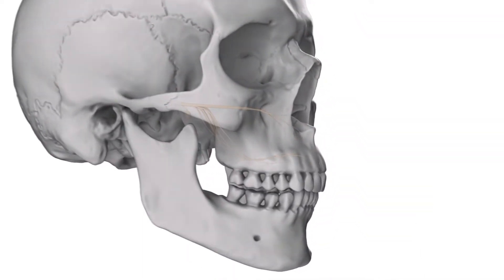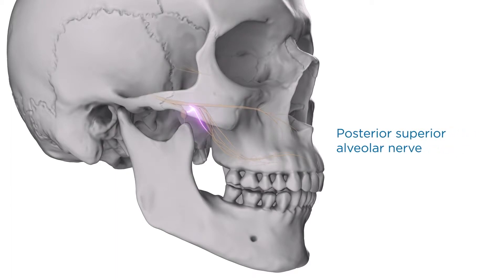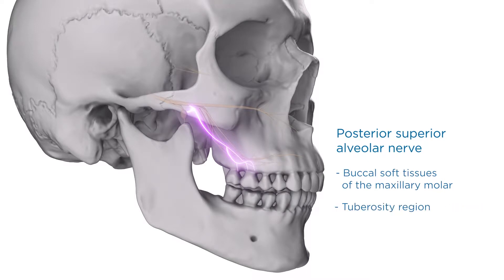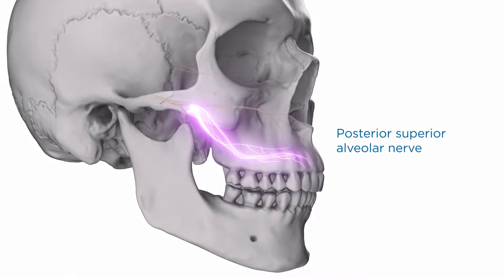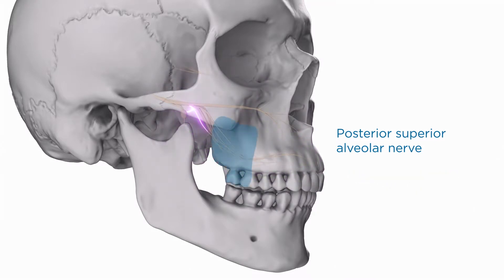The posterior superior alveolar (PSA) nerve is the last branch to leave the maxillary trunk within the pterygopalatine fossa. Before it enters the maxilla, gingival branches innervate the buccal soft tissues of the maxillary molar and tuberosity region. The nerve then enters the maxilla and continues down the posterior wall of the maxillary sinus, contributing fibers to the superior dental plexus. The PSA nerve innervates the maxillary molar teeth—with the possible exception of the mesial buccal root of the first molar—the surrounding periodontium, adjacent buccal mucosa, and mucous membrane of the maxillary sinus.